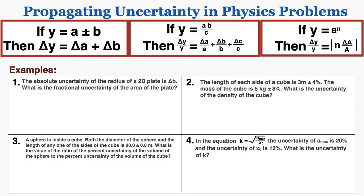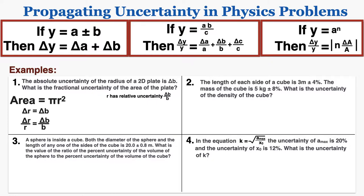In example one, the absolute uncertainty of the radius of a 2D plate is delta b. What is the fractional uncertainty of the area of the plate? The best way to start is by writing down everything you know. The area of a 2D plate is equal to pi r squared, and the absolute uncertainty of r is equal to delta b. This means that the fractional uncertainty of r is going to be equal to delta b over b — that's just the way we express fractional uncertainty as a variable.